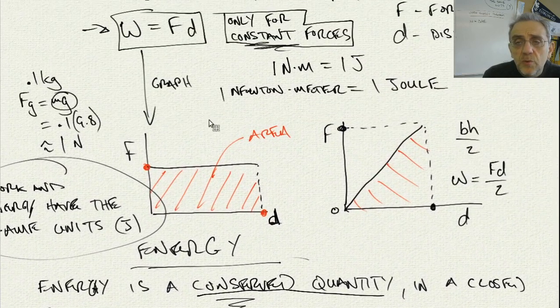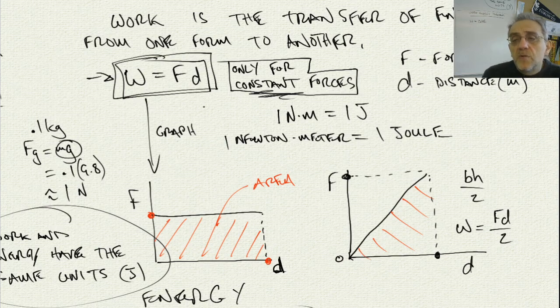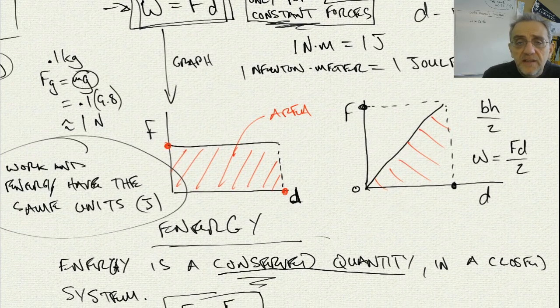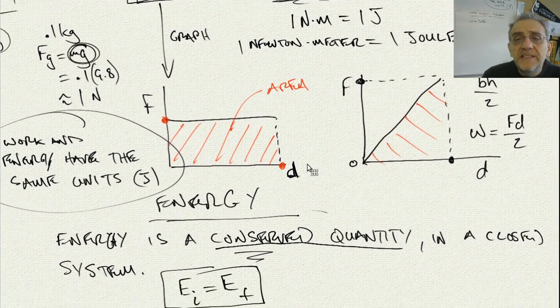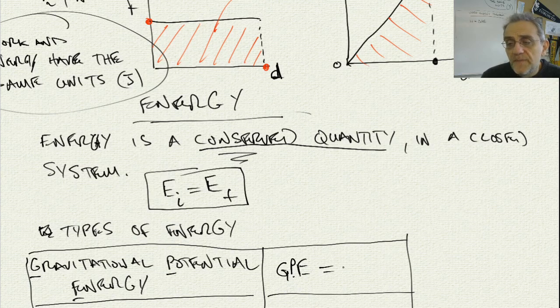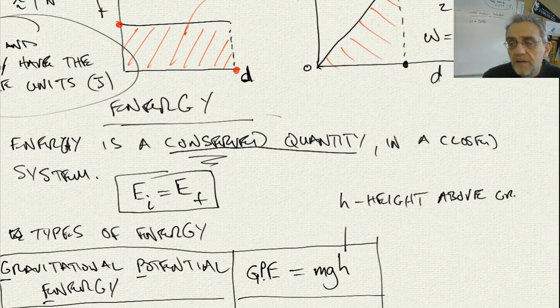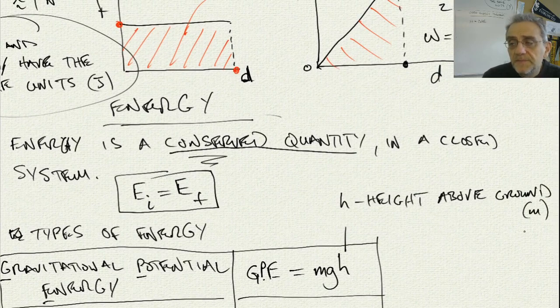What was the amount of work done or the amount of energy necessary to lift something? Well it's force times distance. Well if we're lifting it, that means we have to work against gravity. And what is the force of gravity? It's Mg. And the distance we lift it is the height, H. So it's force times distance where the force is Mg and the distance is H. Where in this case this H represents height above the ground, and that's in meters.